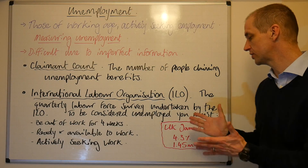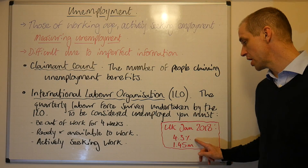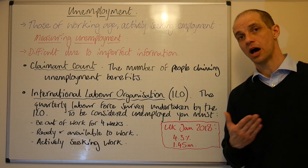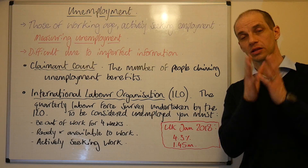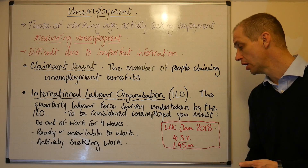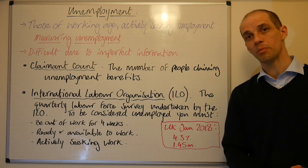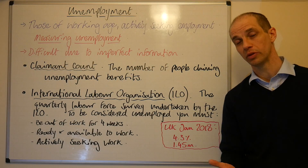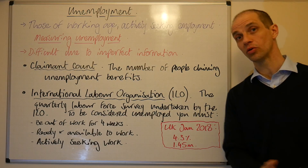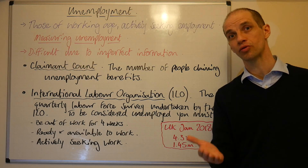Let's consider this for the UK and how to interpret figures on unemployment. In January 2018, on the ILO definition, 4.3% of people were unemployed — taking those out of work, actively seeking employment and ready and available to work, divided by the entire working population. That amounts to 1.45 million people within the UK, which is a very low level of unemployment, suggesting the UK economy is getting a number of things right in terms of reducing unemployment and improving the distribution of income.